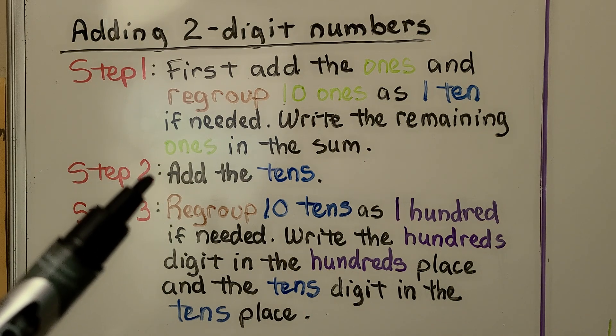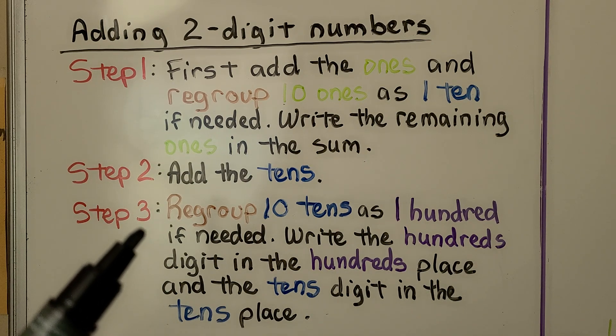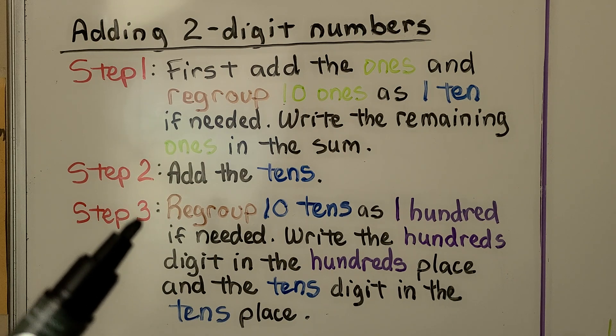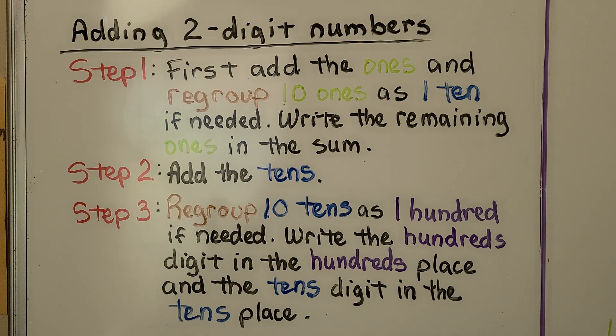Step two, we add the tens. Step three, we regroup ten tens as one hundred if needed. We write the hundreds digit in the hundreds place and the tens digit in the tens place. Let's try some.